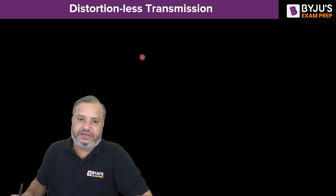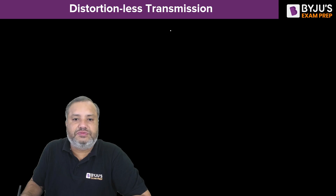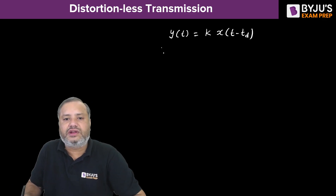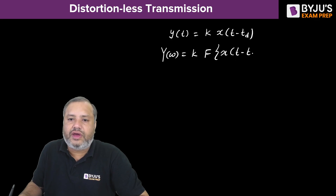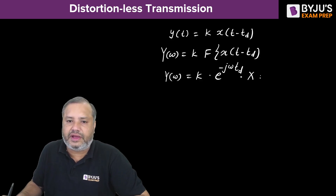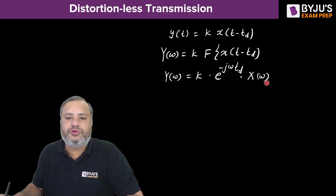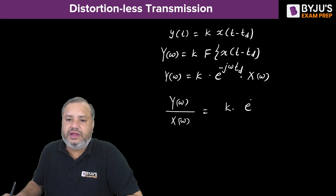Mathematically, two operations are allowed under distortionless transmission: time delay and amplitude scaling. So y(t) = k · x(t − td). Taking the Fourier transform of both sides, Y(ω) = k · X(ω) · e^(−jωtd), since the Fourier transform of a time-delayed signal x(t − td) is e^(−jωtd) · X(ω). Dividing both sides by X(ω), we get k · e^(−jωtd).